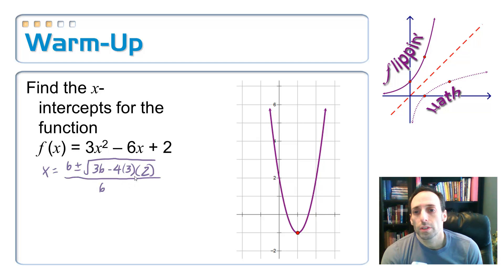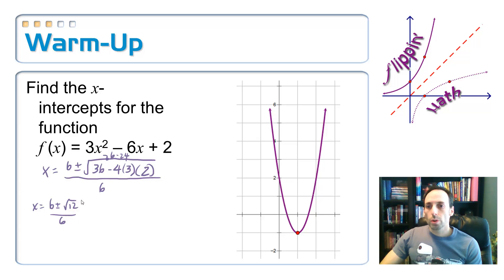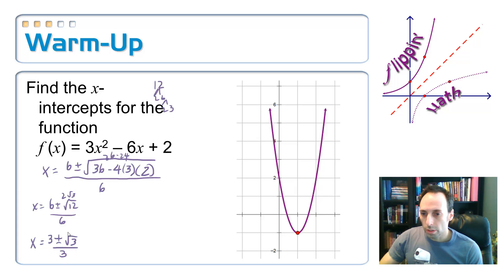So, underneath the square root, we've got 4 times 3 is 12, times 2 is 24. 36 minus 24 is 12. So, x is equal to 6 plus or minus square root of 12 over 6. Square root of 12 is 2 root 3. And I can divide everything by 2, so x should be equal to 3 plus or minus root 3 over 3. Lots of 3's there.